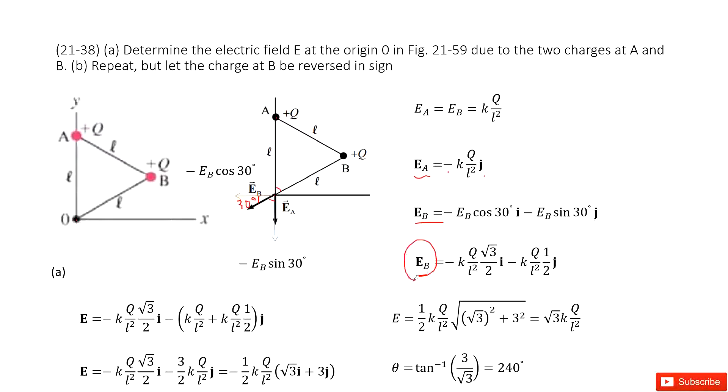Now you can see we have two vectors EA and EB. Can you find the addition of these two vectors? We just need to add the x components together and add the y components together. It looks like this one. And then simplify, the final answer looks like this one.